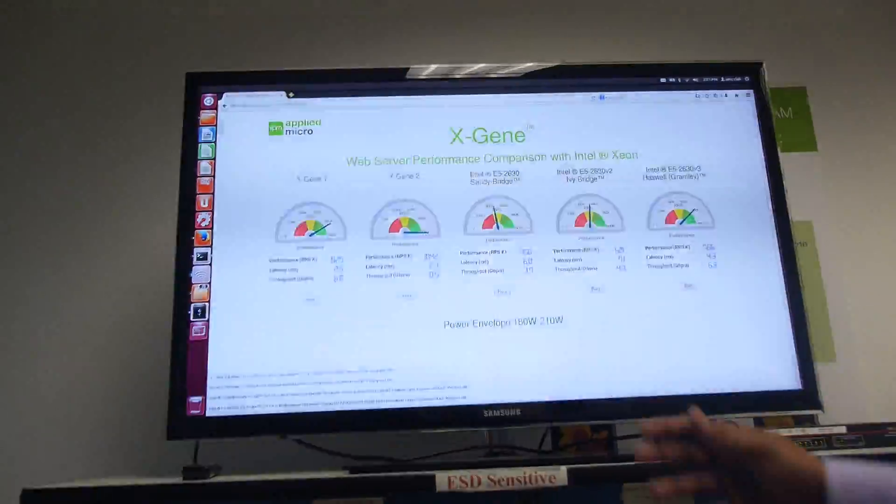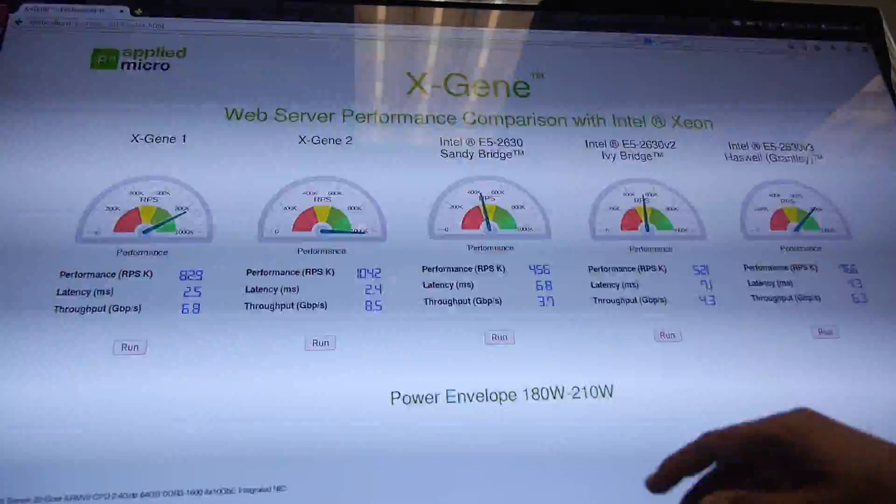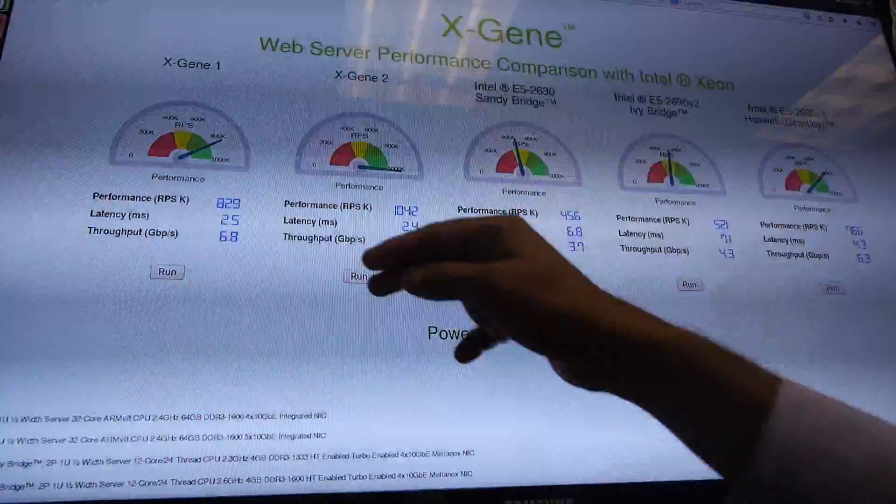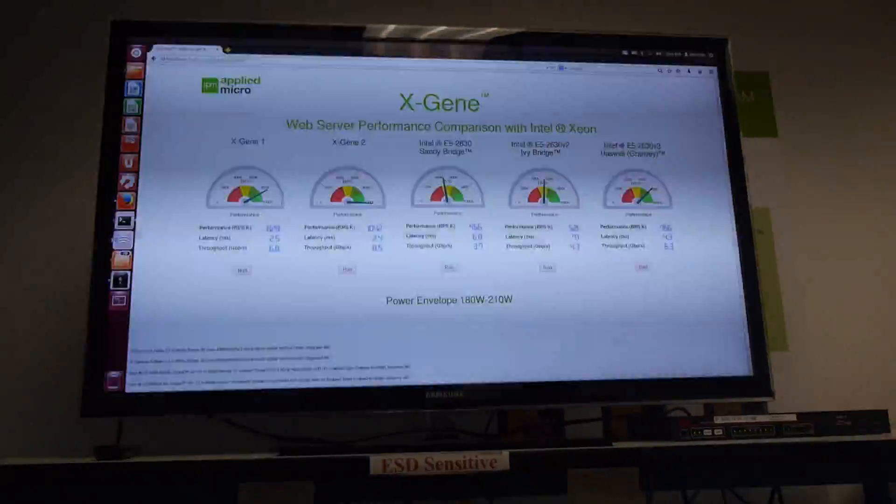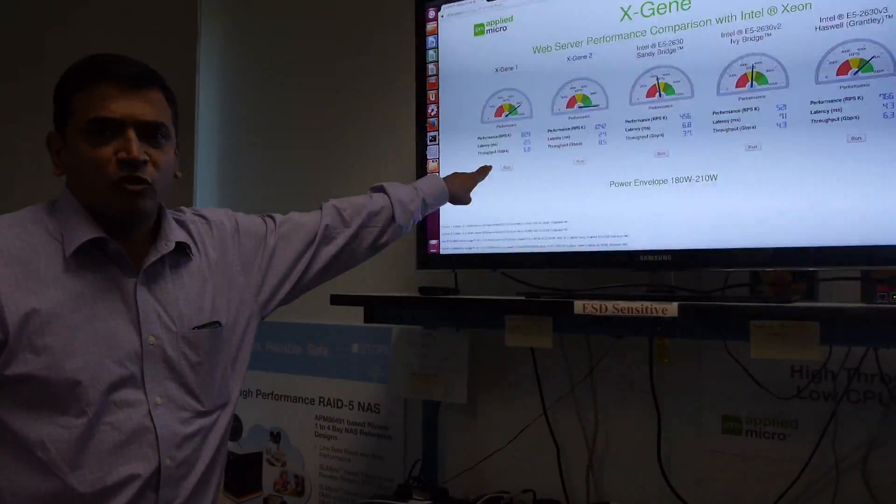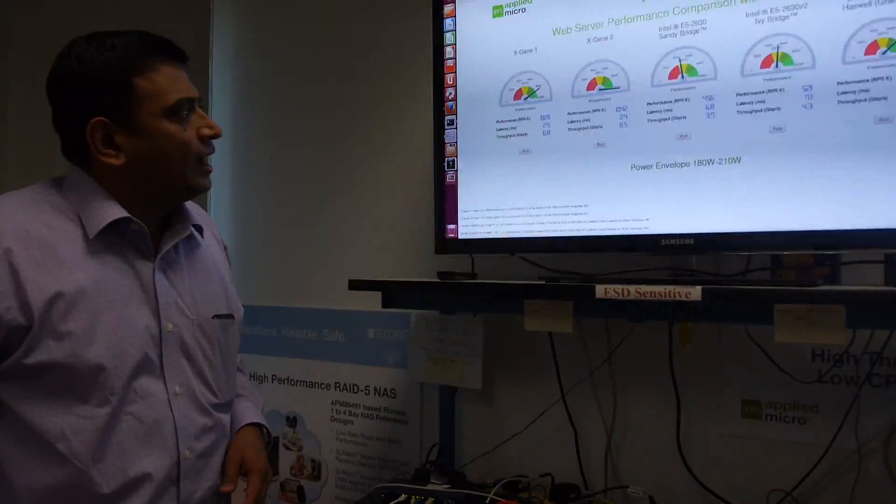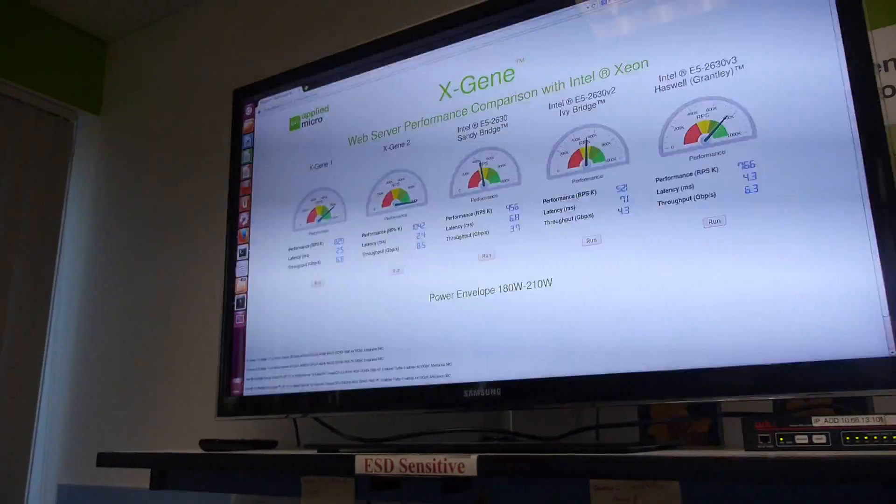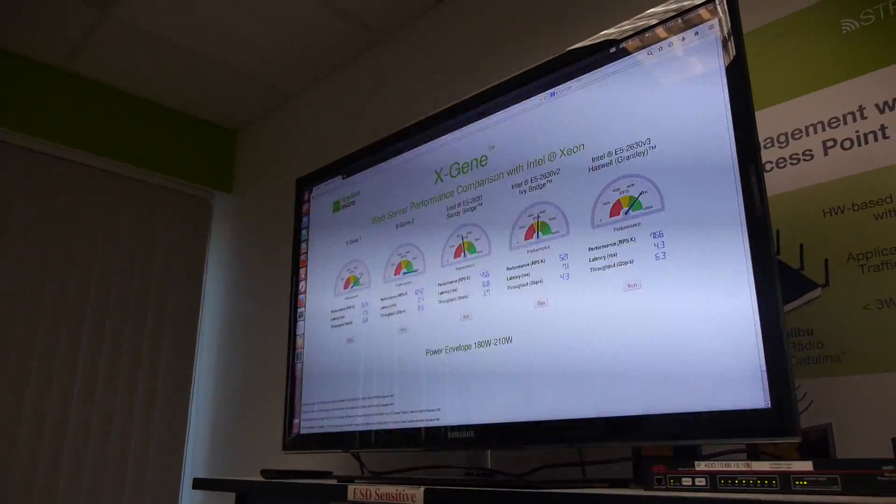When you run the benchmark here, you can see it on the screen. The benchmark itself shows requests per second in thousands, the latency is in milliseconds, and the throughput is in gigabits per second. There are four 10 gigabit Ethernet connections to each server, so there's 40 gigabits going in total.